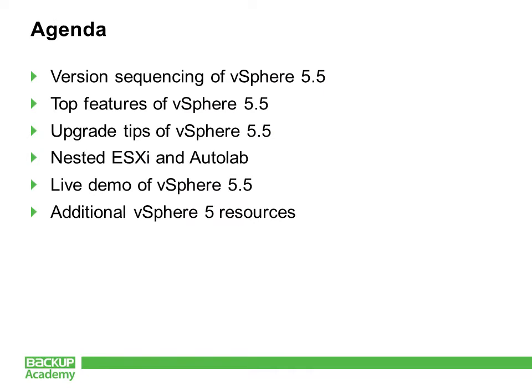Let's start with a quick agenda of what we're going to talk about today. I'm going to talk about the version and sequencing of products associated with vSphere 5.5, upgrade tips, and key features. We'll then talk about two ways of testing it: Nested ESXi and Autolab. I'll also jump into a live recorded video showing the different components of vSphere 5.5, and we'll round out with some great community resources.